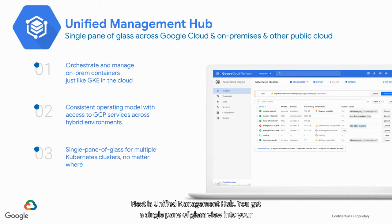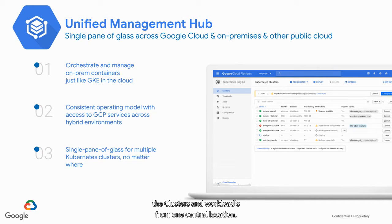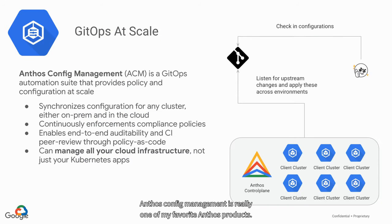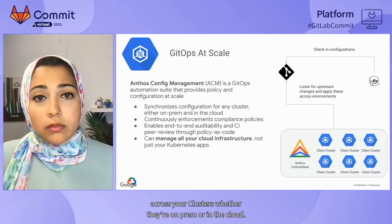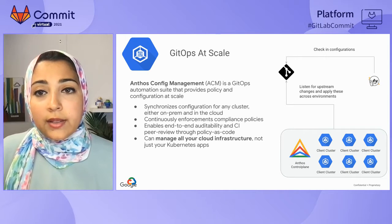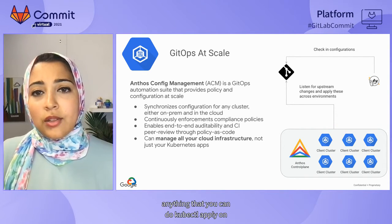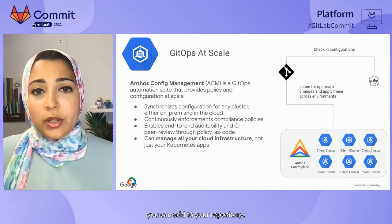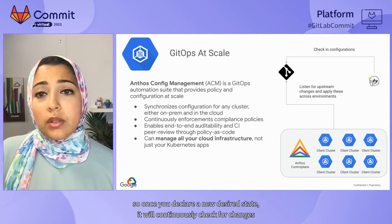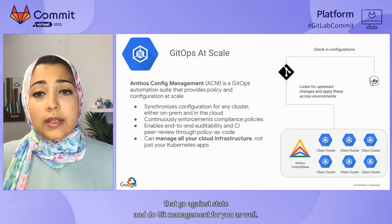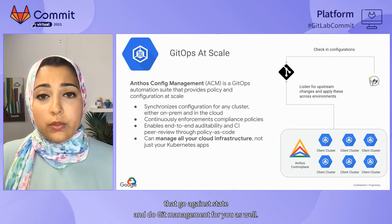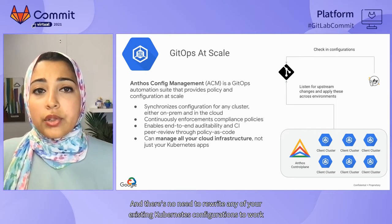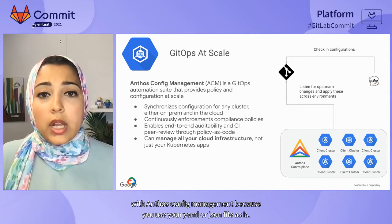Next is the unified management hub — you get a single pane of glass view into your clusters no matter where they're running, able to orchestrate and manage clusters and workloads from one central location. Anthos Config Management is really one of my favorite Anthos products. It's a multi-cluster configuration manager that helps you have consistent policies across your clusters, whether on-prem or in the cloud. It uses a central Git repository to manage access control policies, resource quotas, namespaces — basically anything you can do a kubectl apply on. It's also declarative and continuous, doing drift management for you as well.